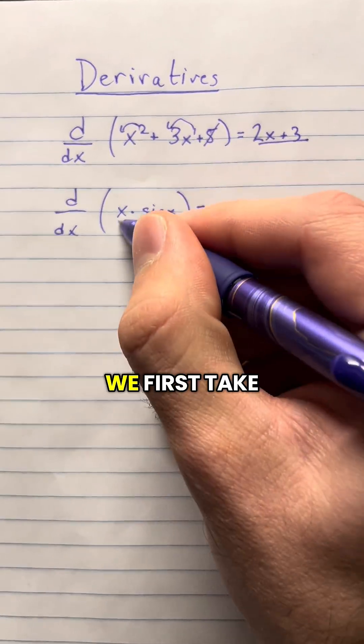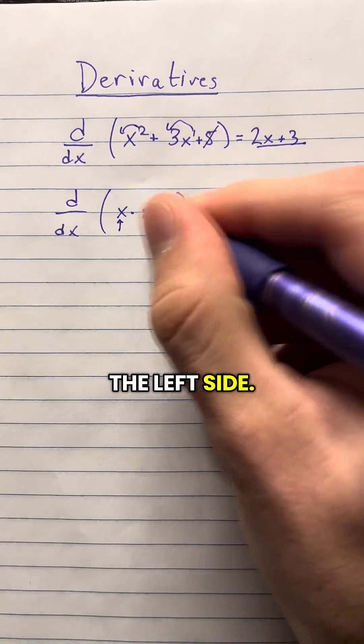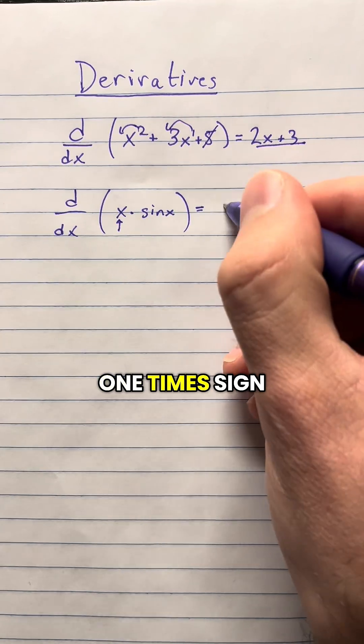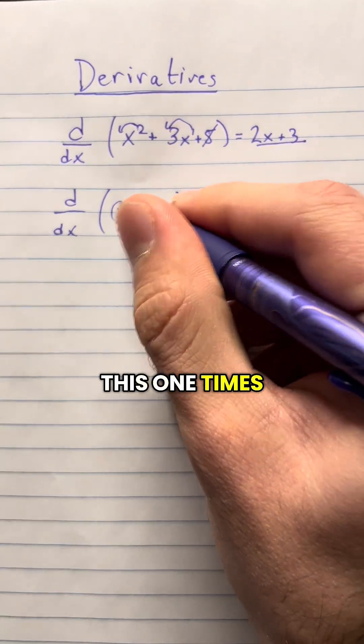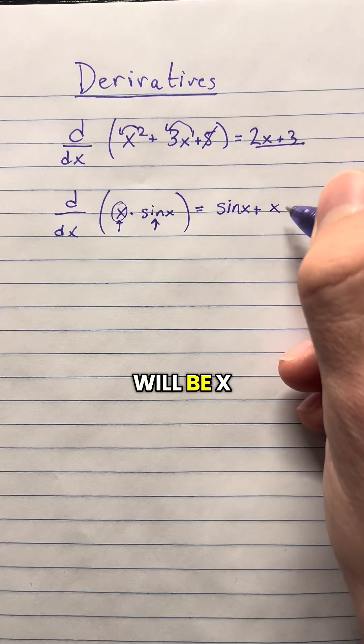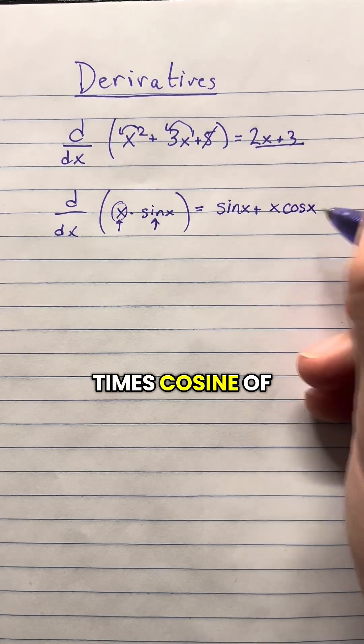So in order to do the product rule, we first take the derivative of the left side, so the derivative of x is just 1, times sine of x. Then we add the derivative of this one times just this. So then this will be x times cosine of x.